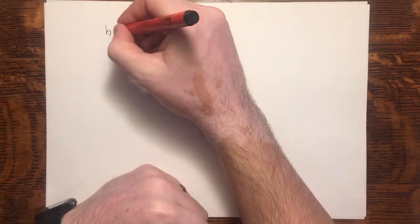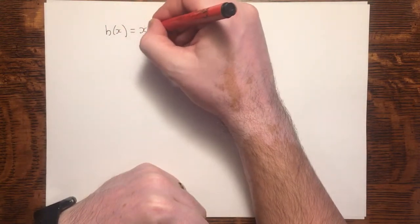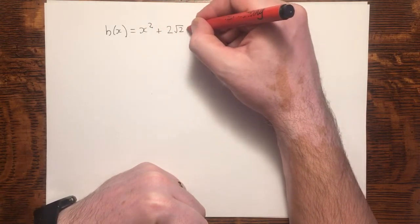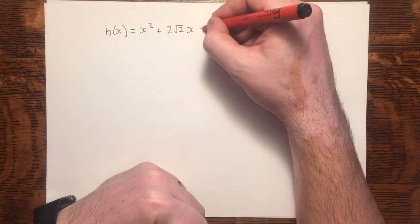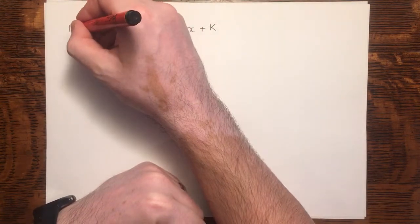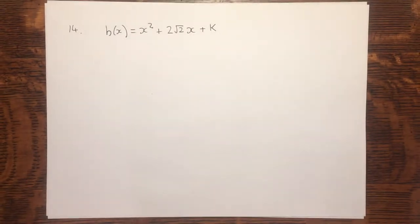In question 14, we are given the function h(x) = x² + 2√2x + k. We're told that this function has equal roots.